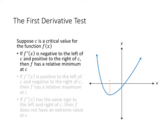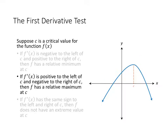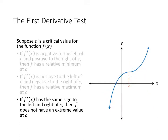Let's visualize the three cases. If the derivative is negative to the left of a point — the function is decreasing before the critical value — and then increasing after the critical value, then we have a minimum. On the other hand, if the derivative is positive to the left of the critical value (the function is increasing to the left) and then the function is decreasing to the right, that means we have a maximum. Finally, if the derivative does not change sign at the critical value — for example, positive to the left and positive to the right — then we don't get an extreme value.